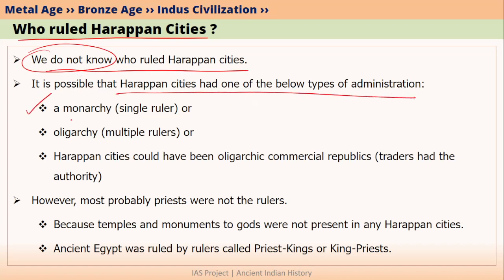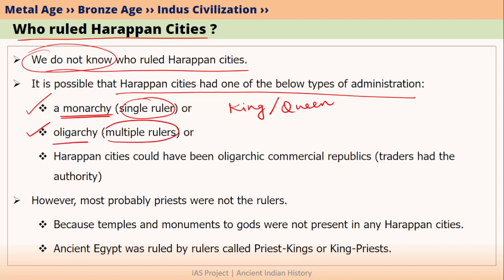It could have been a monarchy. Monarchy means there is a single ruler — for example, like a king or a queen. Or it could have been an oligarchy. Oligarchy means there could have been multiple rulers.